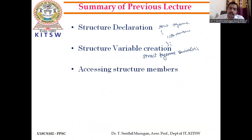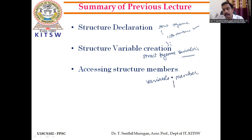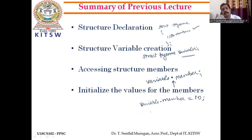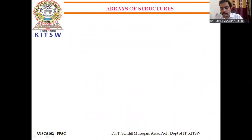For accessing structure members, we use the variable name, a dot operator, then the member name. The dot operator is used to access the member in C programming. To initialize a value, we write variable dot member name equal to a value — for example, if it is integer, we can assign the value 10.